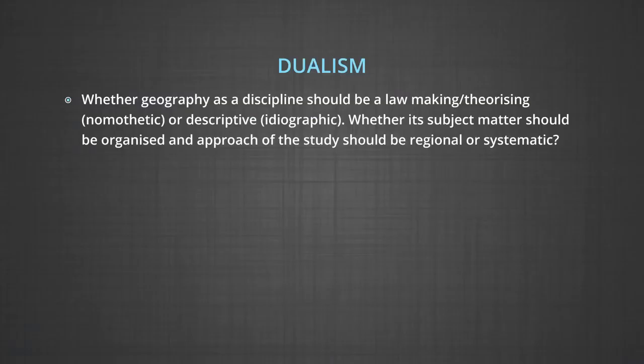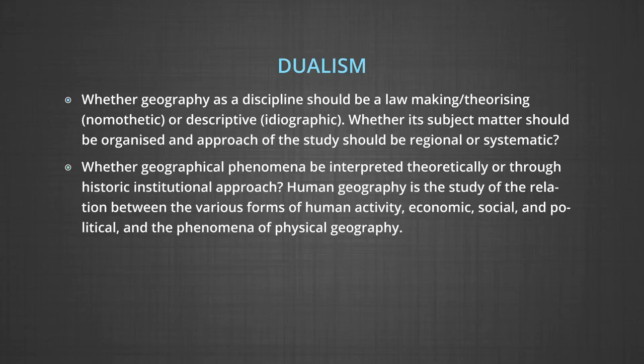For example, whether geography as a discipline should be law-making and theorizing — that is nomothetic — or descriptive and ideographic; whether its subject matter should be organized and studied following a regional or systematic approach; and whether geographical phenomena should be interpreted theoretically through a historic institutional approach. Human geography is the study of the relation between various forms of human activity — economic, social and political — and the phenomena of physical geography. These have been issues for intellectual exercise.